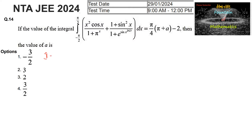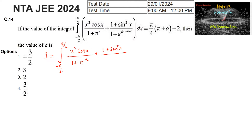I can consider the integral I equal to the integral from −π/2 to +π/2 of [x² cos x / (1 + πˣ)] + [(1 + sin²x) / (1 + e^(sinx)^2023)] dx.